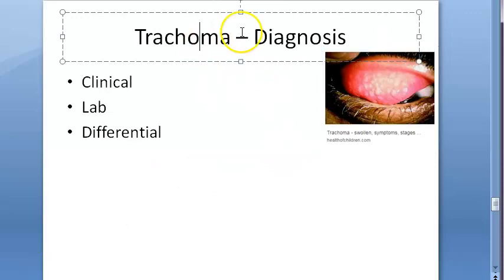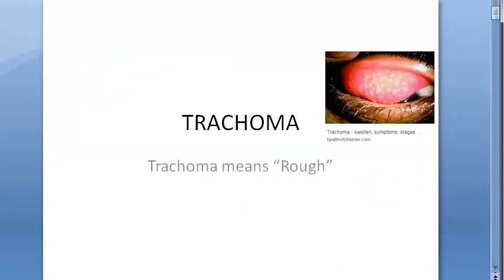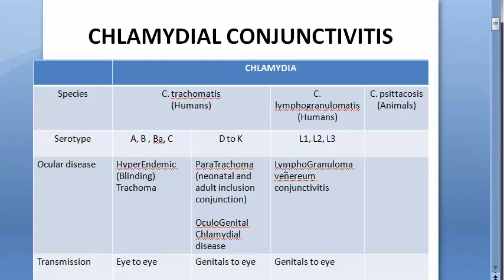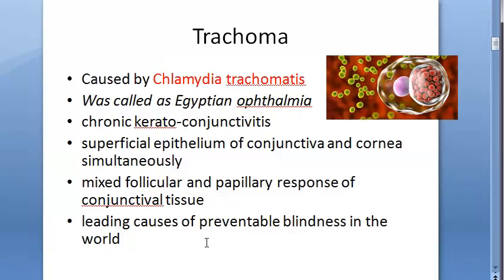In this video, let us look at the diagnosis of trachoma - the clinical diagnosis, the lab diagnosis, and the differential diagnosis. A quick recap: trachoma in Greek means 'rough.' It is a conjunctivitis caused by Chlamydia trachomatis, specifically causing hyper-endemic blinding trachoma.